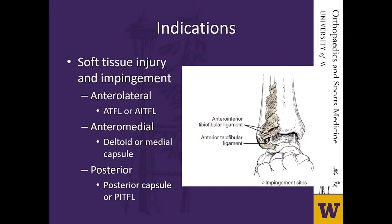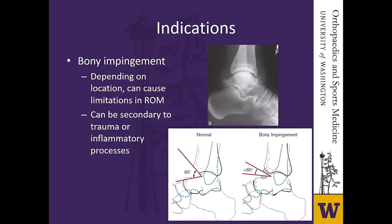A common indication for ankle arthroscopy is soft tissue injury and impingement, most commonly anterolateral — with injury to the ATFL or AITFL resulting in impingement with ankle range of motion. You can also find impingement anteriorly secondary to deltoid or medial capsule injury, and posteriorly secondary to posterior capsule or PITFL injury. Treatment typically involves debridement and/or repair. Similarly, bony impingement from osteophytes or ossicles can cause severe limitations in ankle joint range of motion, such as anterior tibial or anterior talar osteophytes limiting dorsiflexion. Treatment typically involves resection or debridement.